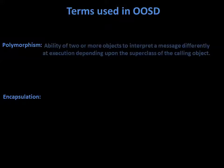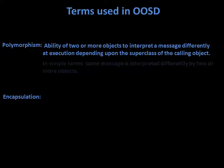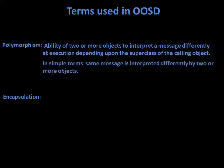What is polymorphic? It is the ability of two or more objects to interpret a message differently. In simple terms, the same message is interpreted differently by two or more objects.